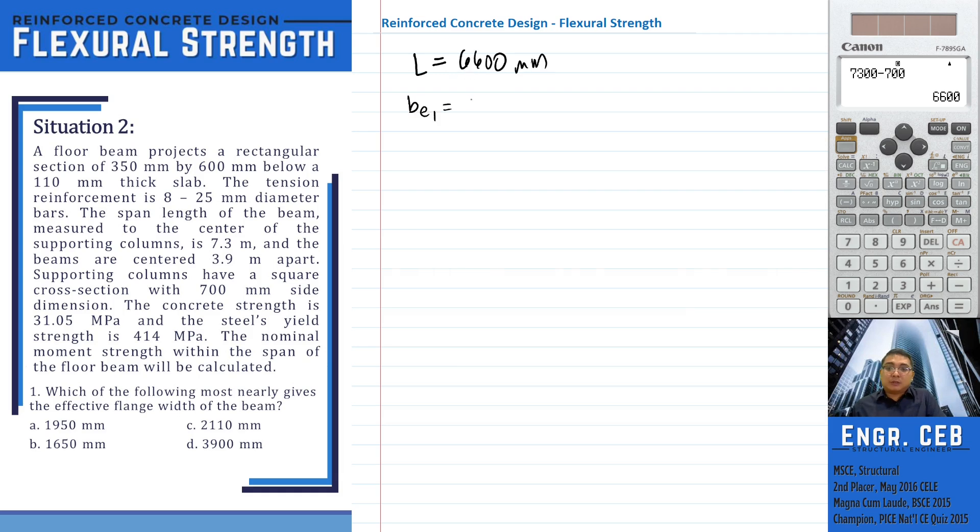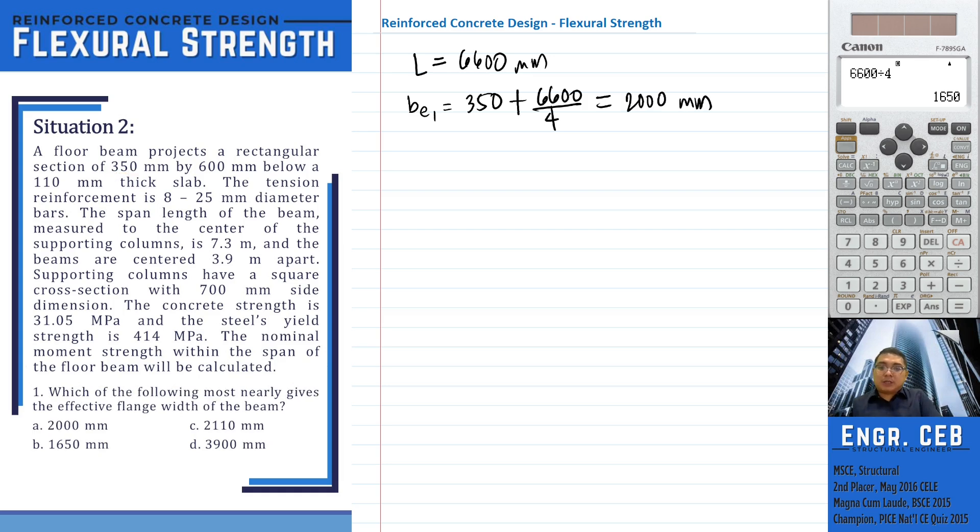Going back in our formula, B sub W based on our given is 350. B sub E equals B sub W plus L over 4. So that is 2,000 millimeters. Next, we have B sub E equals B sub W plus 16T. The thickness of the slab is 110, so therefore this is 2,110.